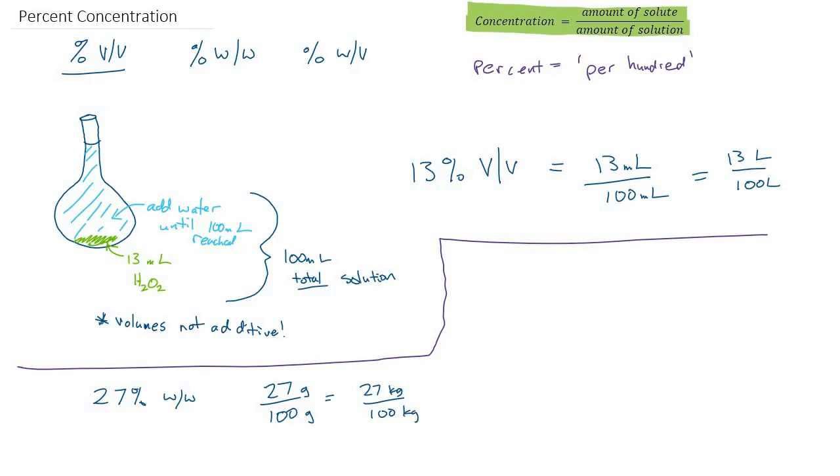Any unit of mass will work. You can use pounds if you want, but it's 27 out of 100 and the units have to be mass. Again, anytime you see percent weight by weight you can automatically turn that into grams per hundred grams as one example of the unit it could be, because that means the same thing.